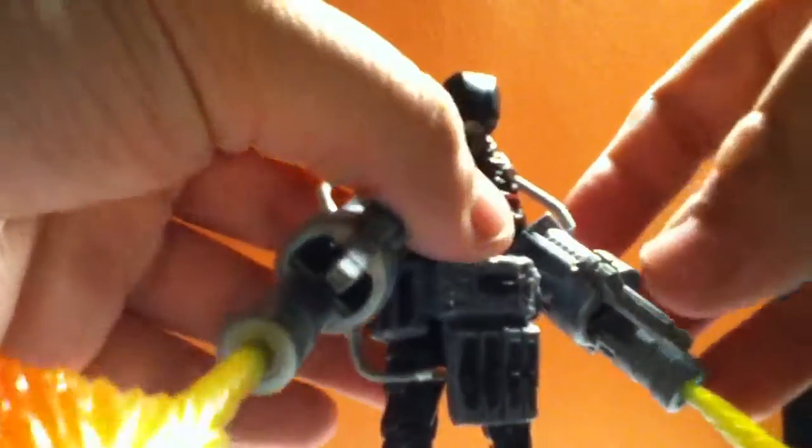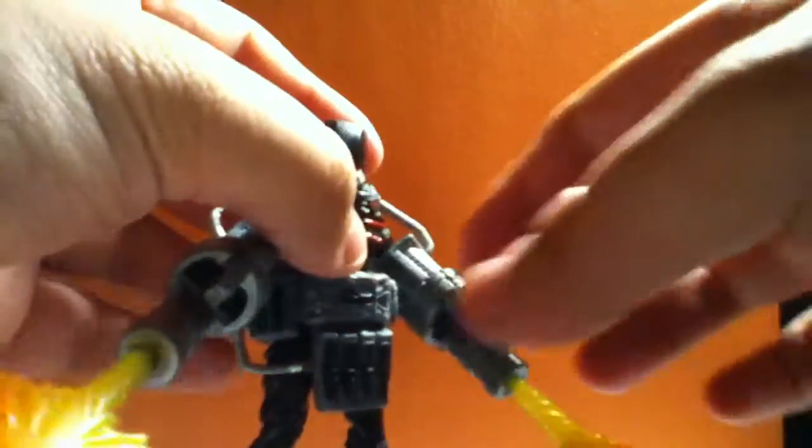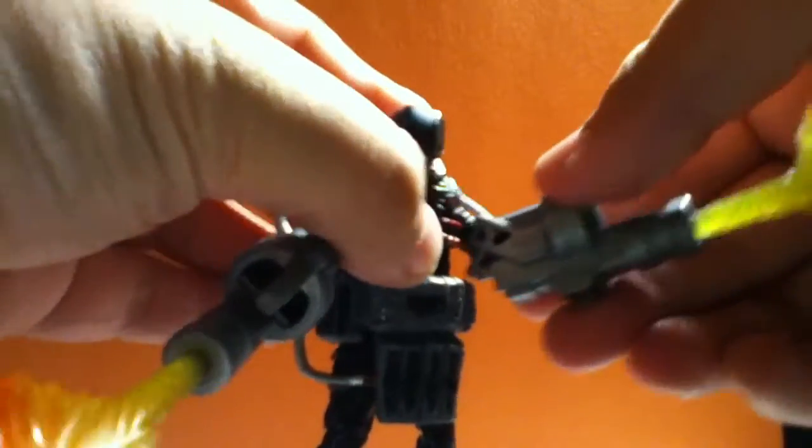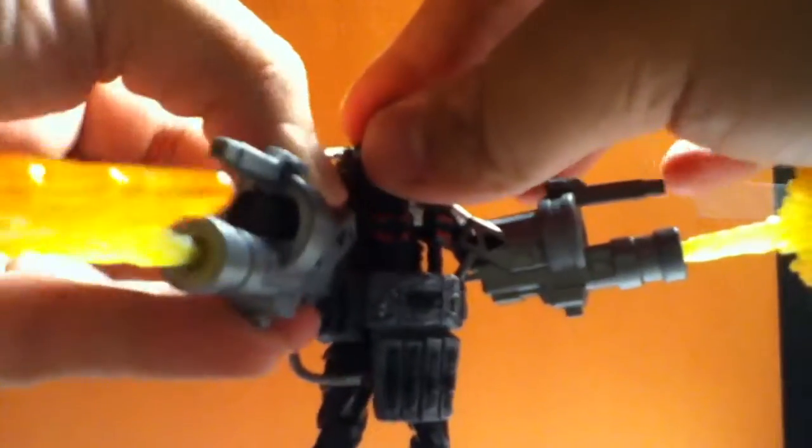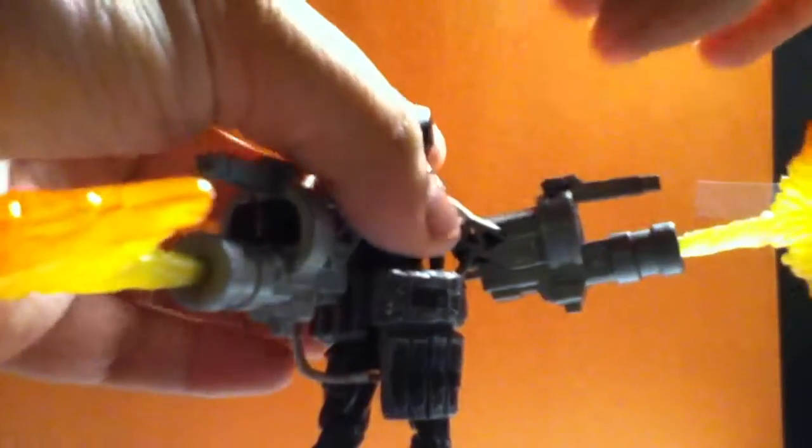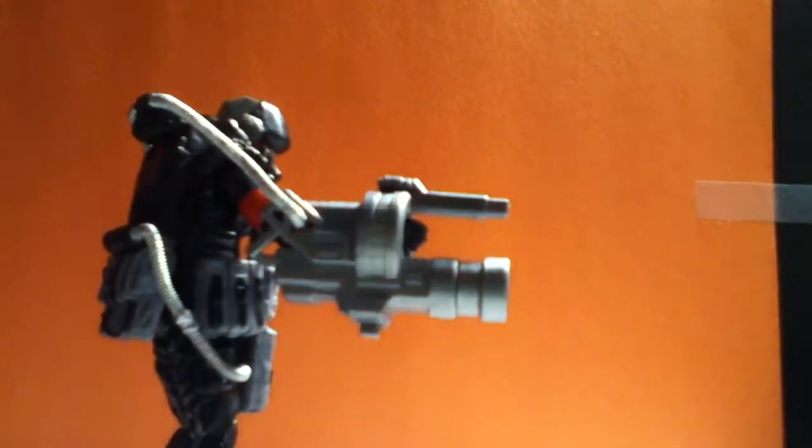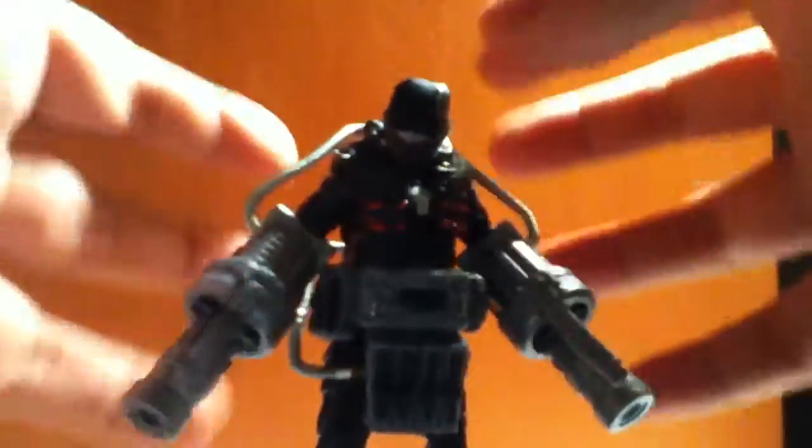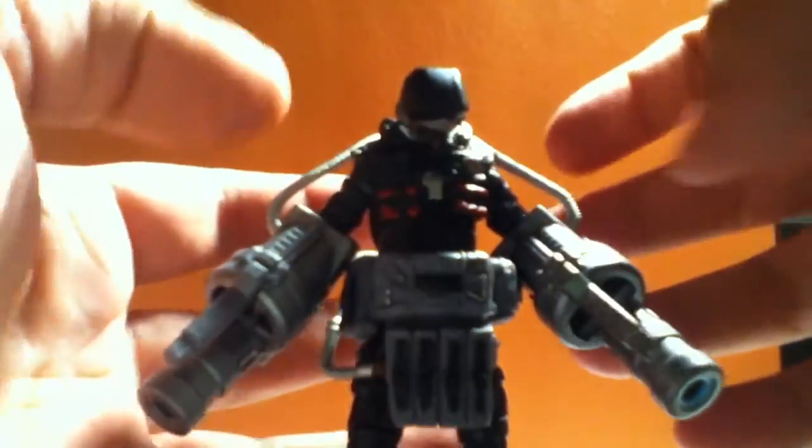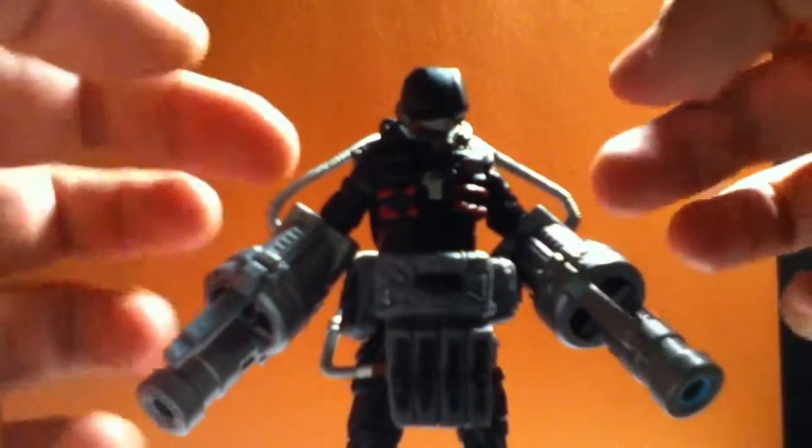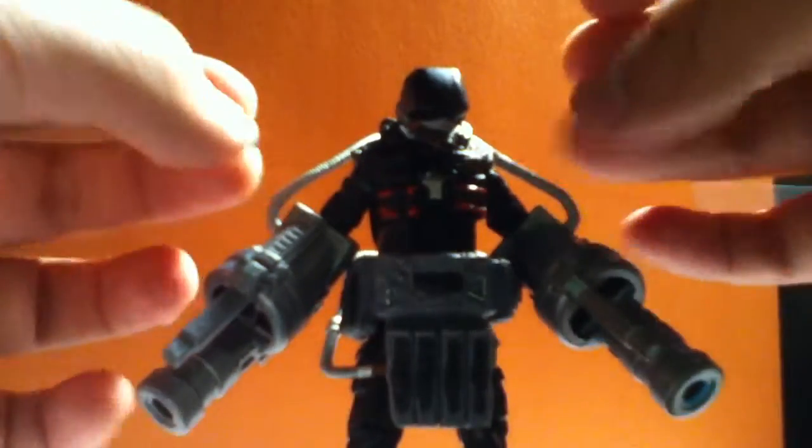He has these gimmick blasters that came with Red Skull and the Hydra. They shoot out, and the other one doesn't shoot as far. Or, maybe they do. Okay, so yeah, those are the gimmicks that he has. These little pipe things are going into here to make it look like they're fire tubes.